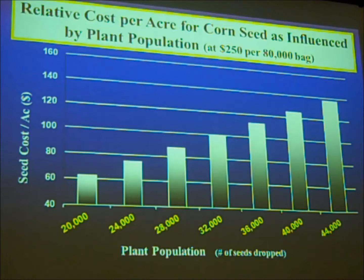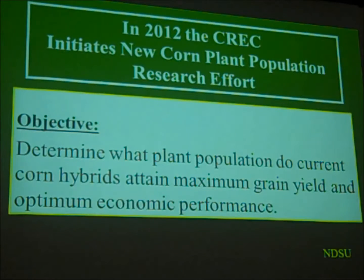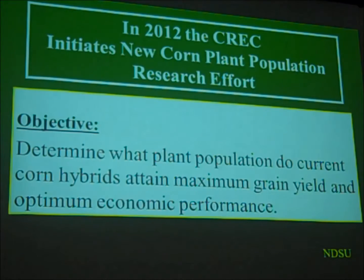You can see how plant populations can have a significant influence, especially as production margins become more challenging — it's certainly a factor that warrants further investigation. And as Bruce commented, this is an issue being looked at by both public and private interests. So in 2012, we initiated plant population work once again, basically to determine what plant population, with current hybrids, would provide maximum grain yield and optimum economic performance.